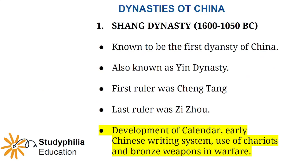The first ever known dynasty dates back to 1600 BC, i.e. the Shang dynasty, also sometimes known as the Yin dynasty. The first ruler was Cheng Thang and the last was Tzu Chou. This dynasty saw the development of the calendar, early Chinese writing system, and use of chariots and bronze weapons in warfare.